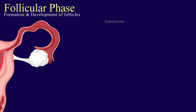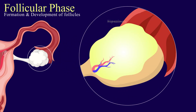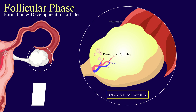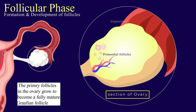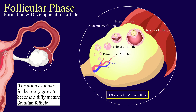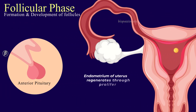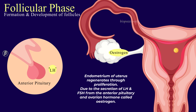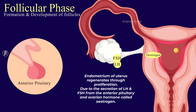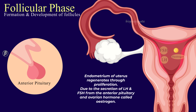Follicular phase — formation and development of follicles. The menstrual phase is followed by the follicular phase. During this phase, the primary follicle in the ovary grows to become a fully matured Graafian follicle. Simultaneously, the endometrium of the uterus regenerates through proliferation. This occurs due to the secretion of LH and FSH from the anterior pituitary, and estrogen from the ovary. It lasts for 10 to 15 days.